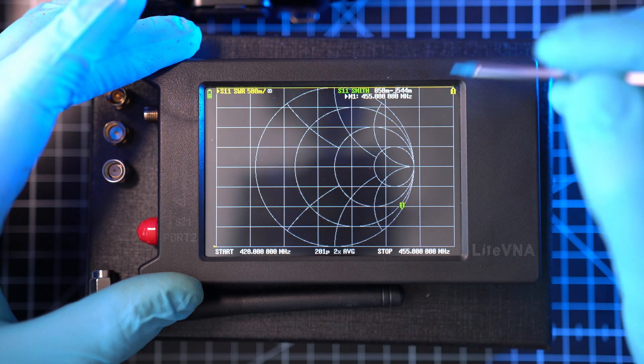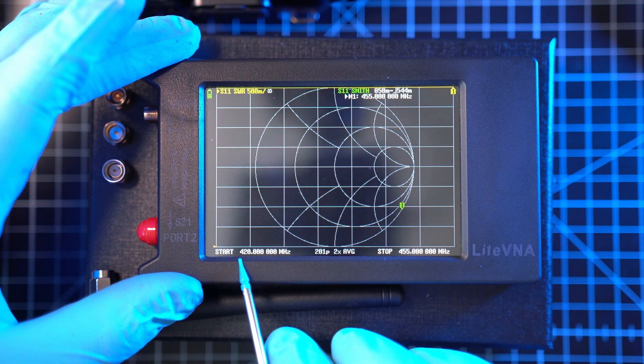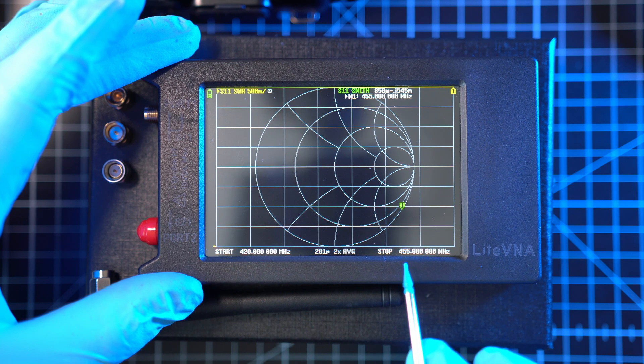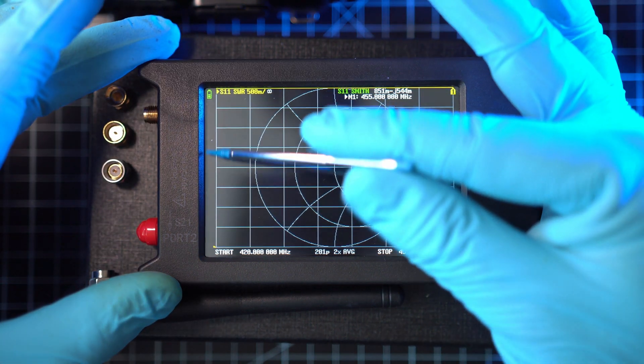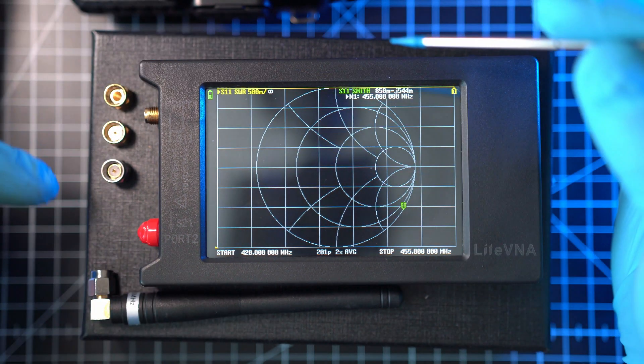Now the VNA looks only in that range from 420 to 455 MHz. As you see, the calibration is missing. You will do it with these little guys.